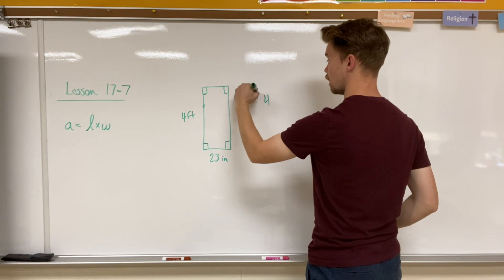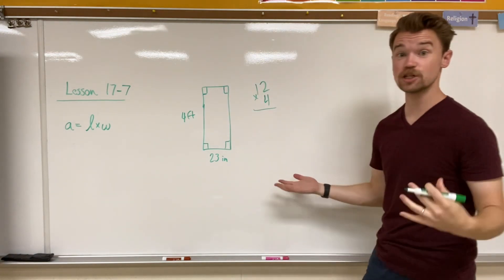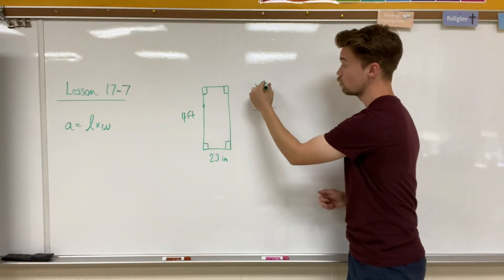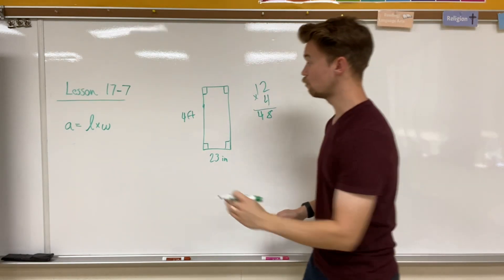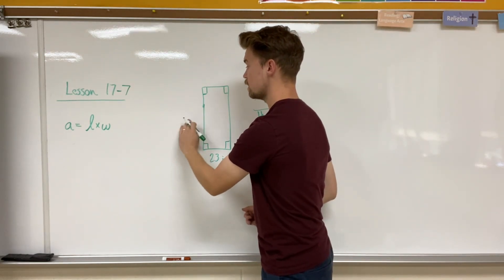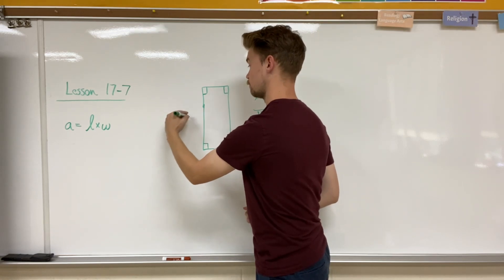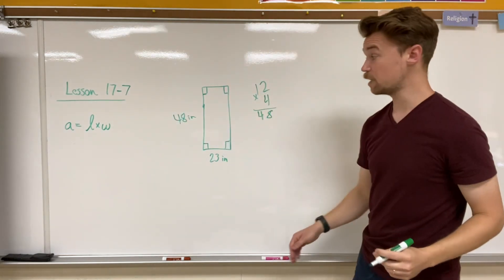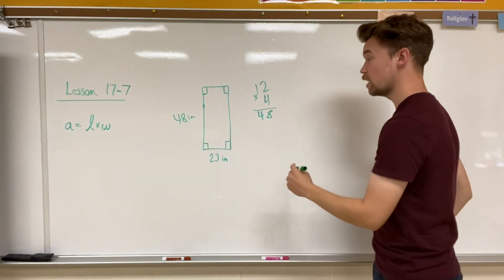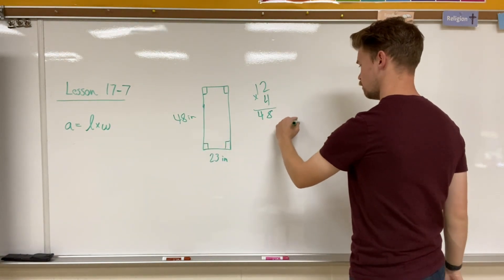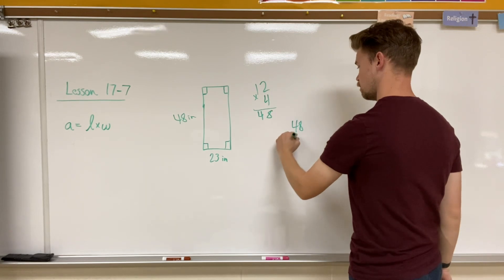I'm going to have four times 12 because there's 12 inches in a foot and I have four feet. So two times four is eight and four times one is four. So I could rewrite this as 48 inches. Now I can multiply my length times my width or side by side. 48 times 23.